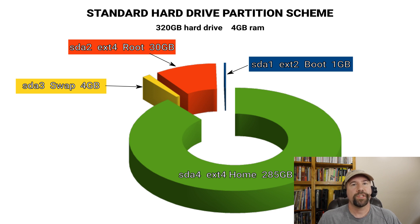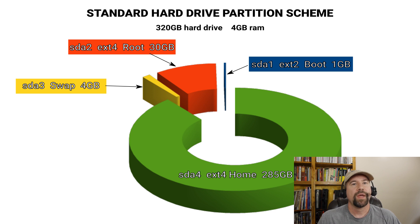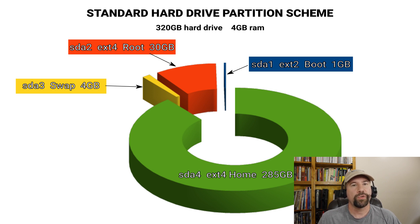The reason EXT2 is used is that it lacks journaling, which gives it faster read speeds and translates into faster boot speeds. Our second partition is going to be our root, formatted in EXT4, although XFS and BTRFS are options as well. If you are a new Linux user, go ahead and stick with EXT4. I set it at 30 gigabytes capacity, which is more than most Linux users are ever going to use — even on my system with all the stuff I've got running, I'm still at less than 20 gigs.